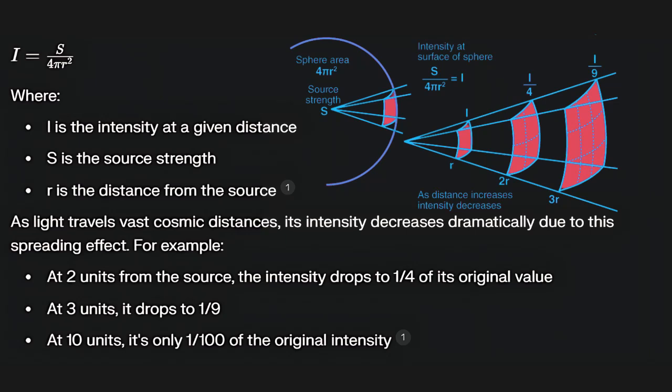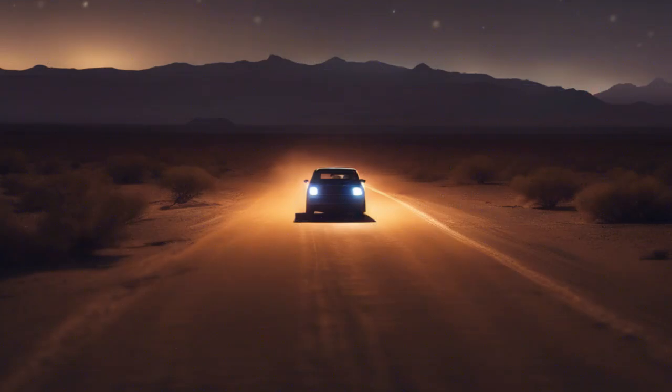This rapid decrease in intensity means that light from very distant objects, like far away stars and so-called galaxies, becomes extremely faint by the time it would reach Earth. In this case, it wouldn't even reach Earth. You wouldn't be able to see the lights of headlights of a car in a desert.